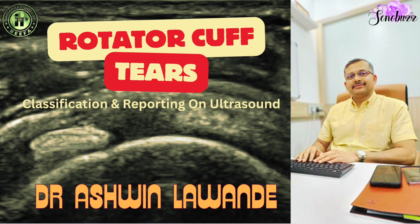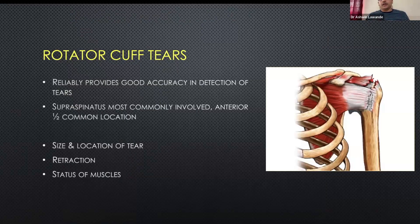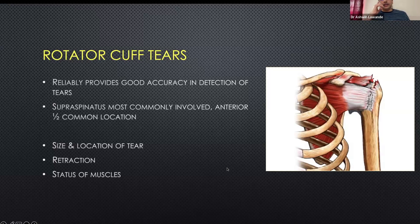Now we come to rotator cuff tears, which is the commonest indication for a shoulder ultrasound. Ultrasound has good accuracy in detection of tears, as good as MR. When you do a dynamic evaluation, you can actually see certain tears better, especially partial thickness tears and subtle tears.